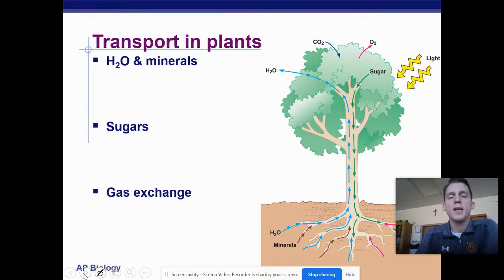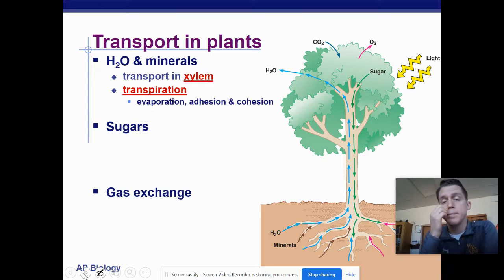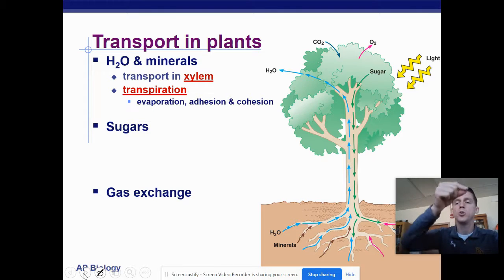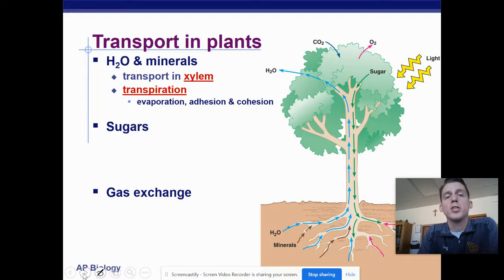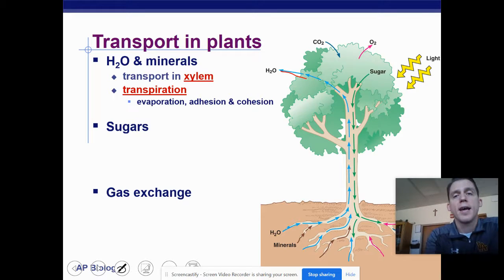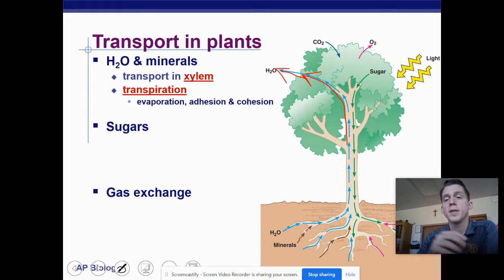Water and minerals are transported through tiny structures called the xylem — little tubes, like tiny straws, that go all the way up from the roots to the shoots of the plant. This is where transpiration happens. Transpiration is when water evaporates out of a plant through the leaves. Plants are constantly losing water, and because water is being lost, more water gets pulled up to replace it — just like a straw. When you suck liquid out of a straw, more water comes up to replace it. Same thing happens in a plant.